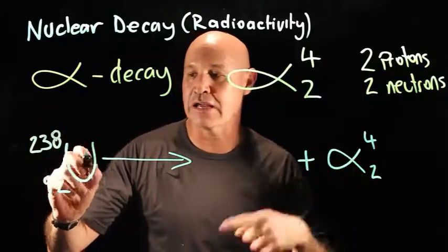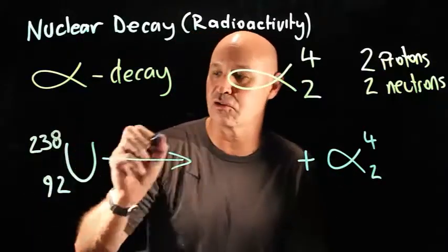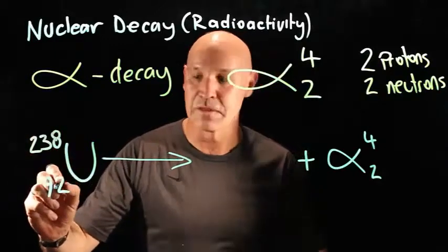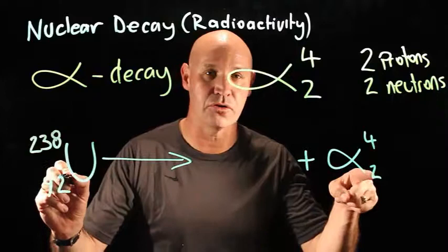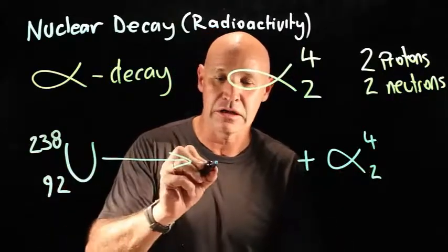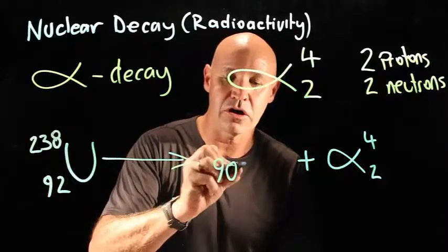So that means that its atomic number down here has reduced by two because two protons have been ejected. So it's no longer 92, it is now 90.